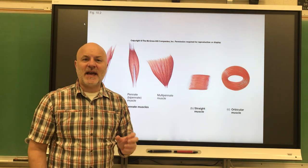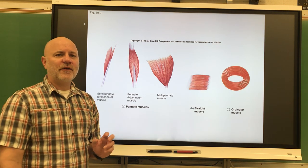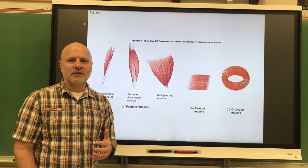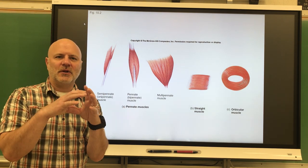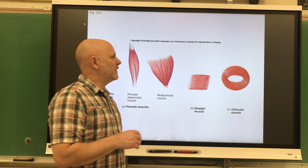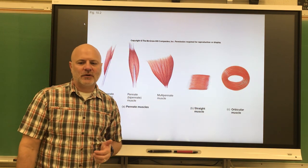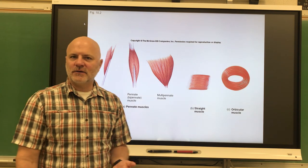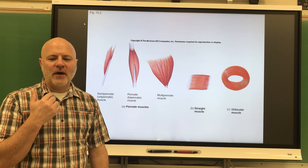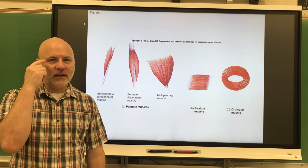When we contract the biceps brachii, that's going to get our forearm to move upwards. Let's take a look at arrangement of fascicles. Fascicles are groups of muscle cells. The first is called orbicular or circular. These are fascicles arranged in concentric circles. These surround external body openings, so sphincters are orbicular, also like around our eyes, around our mouth. We have the orbicularis oris around our mouth or orbicularis oculi around our eyes.